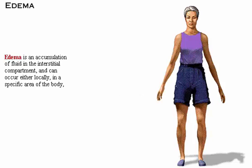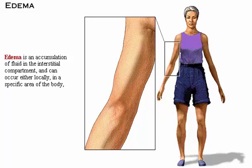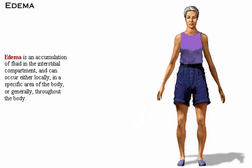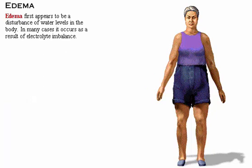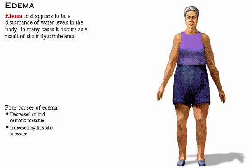Edema is an accumulation of fluid in the interstitial compartment and can occur either locally, in a specific area of the body, or generally throughout the body. Although edema first appears to be a disturbance of water levels in the body, in many cases it occurs as a result of electrolyte imbalance. A lack of plasma protein commonly causes edema. The four causes of edema are: decreased colloid osmotic pressure, increased hydrostatic pressure, increased capillary permeability, and lymphatic obstruction.